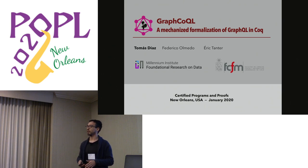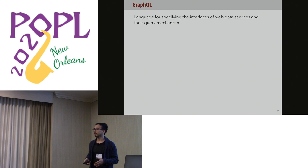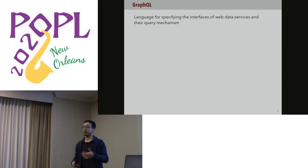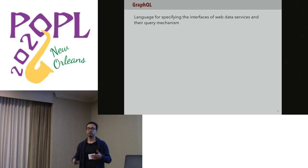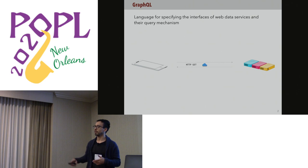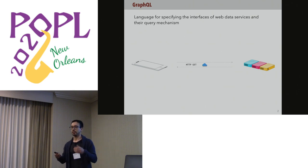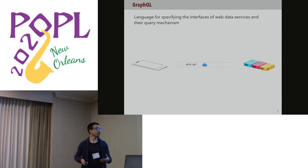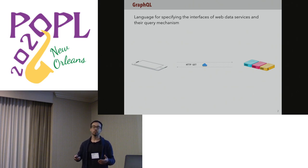So first of all, what is GraphQL? GraphQL is a language for specifying the interfaces of web data services and for acquiring data from these services. To get a sense of how this works, imagine you're a client on a mobile phone and you want to access information from a server about a particular artist — their artworks and things like that. You'll query the system using GraphQL.